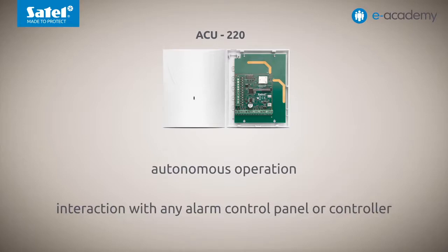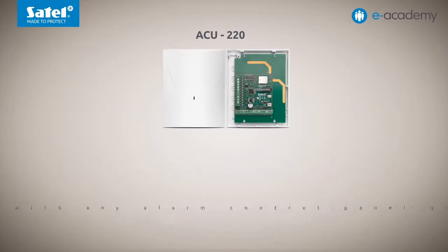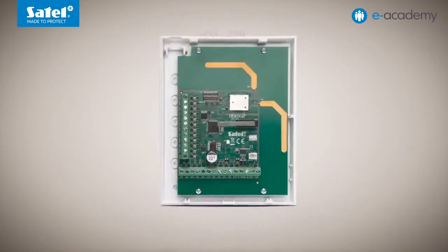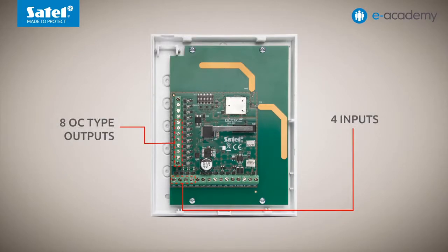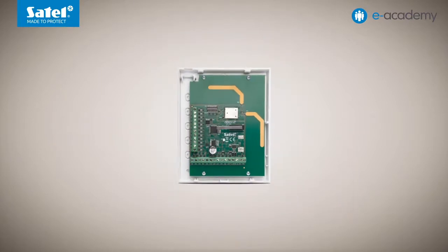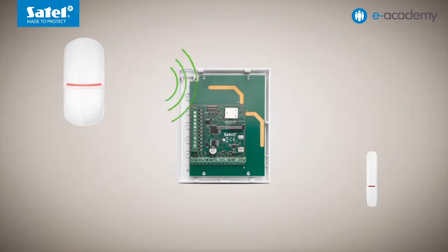The ACU220 serves as a universal module of wireless devices. In this case, the built-in programmable inputs and programmable outputs available on the controller's printed circuit board are used for interaction with the above-mentioned control panels, controllers and other devices. For the ACU220, the diversification of antennas is also worth mentioning. To keep the communication parameters as good as possible, the module will automatically select one of its antennas to receive transmissions, depending on the strength of the received signal.